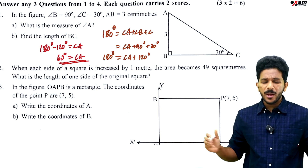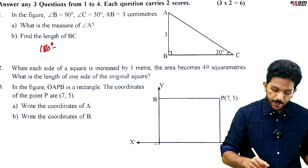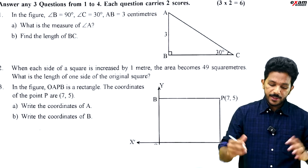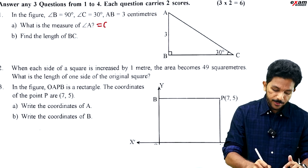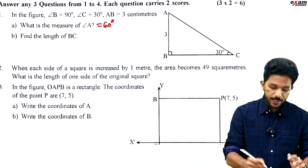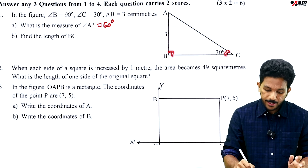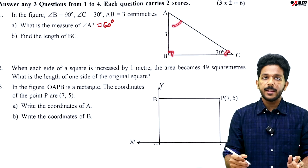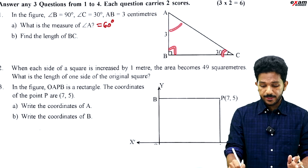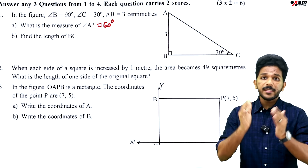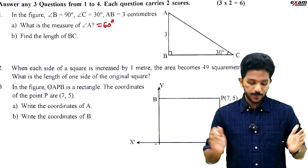Angle A is 60 degrees. This is a 30-60-90 triangle — the angles are 30, 60, and 90 degrees.